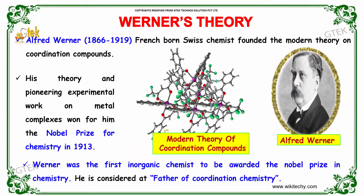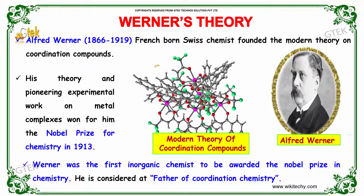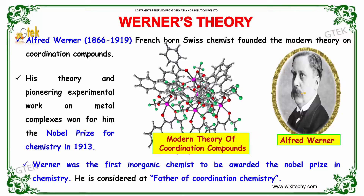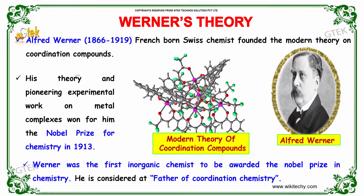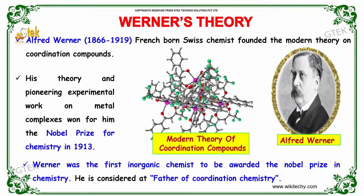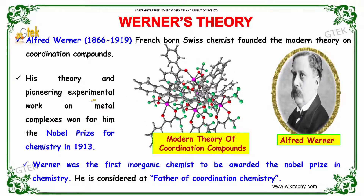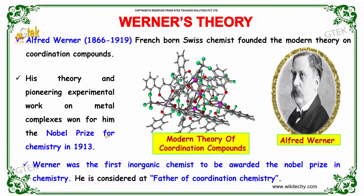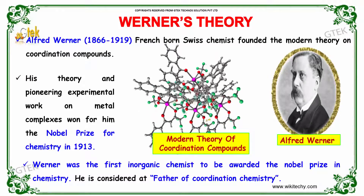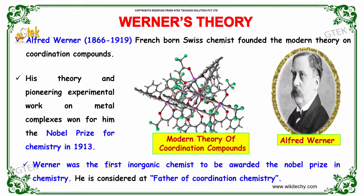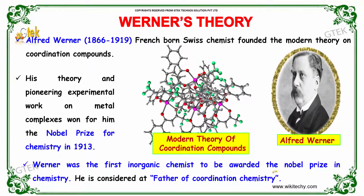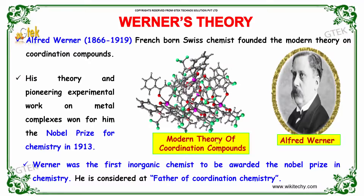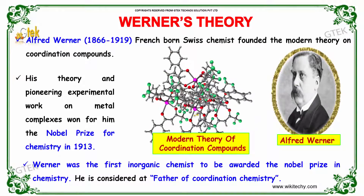Let's move on to Werner's theory. Sir Alfred Werner, a French-born Swiss chemist who lived from 1866 to 1919, founded the modern theory of coordination compounds. His theory and pioneering experimental work on metal complexes won him the Nobel Prize for Chemistry in 1913. Werner was the first inorganic chemist to be awarded the Nobel Prize in Chemistry, and he is considered the father of coordination chemistry.